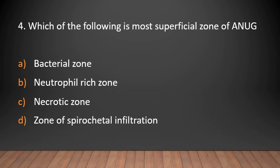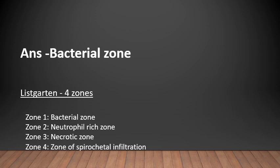MCQ 4: Which of the following is the most superficial zone of ANUG? Bacterial zone, neutrophil-rich zone, necrotic zone, or zone of spirochetal infiltration? Answer: Bacterial zone. The 4 zones of ANUG were described by Listgarten: Zone 1 — bacterial zone, Zone 2 — neutrophil-rich zone, Zone 3 — necrotic zone, Zone 4 — zone of spirochetal infiltration.